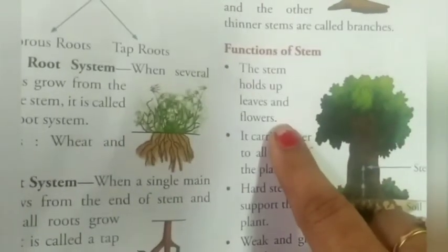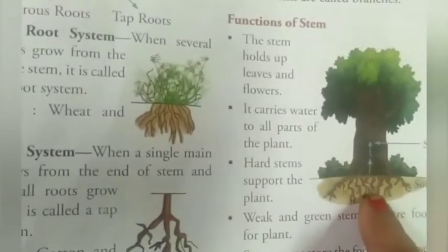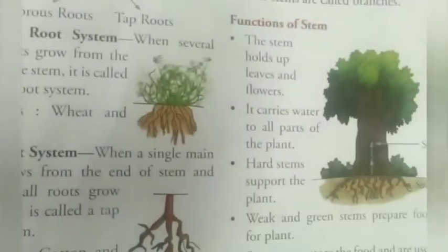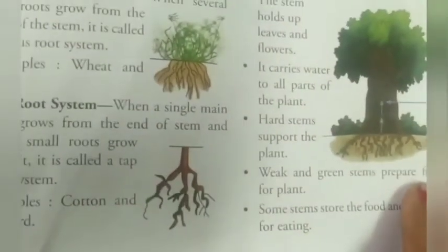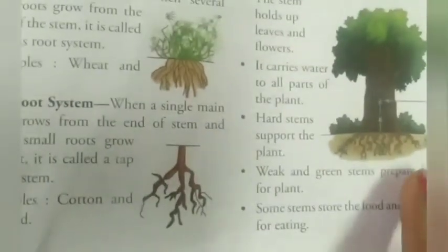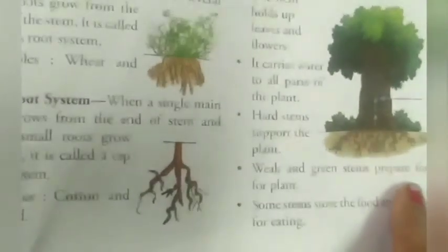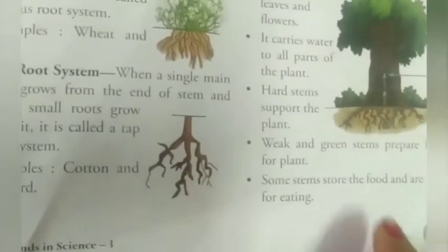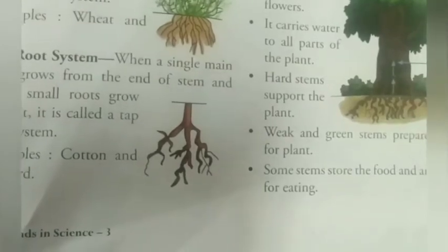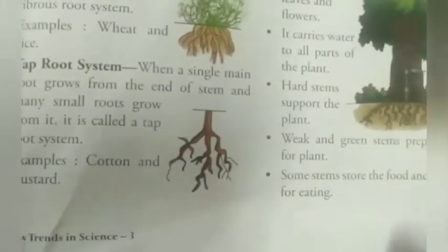The stem carries water and minerals from the roots and transports them to all parts of the plant. Hard stem supports the plant. Weak and green stem prepares food for the plant and also stores food. Some stems store food and are used for eating, like potato, sugarcane, and ginger.